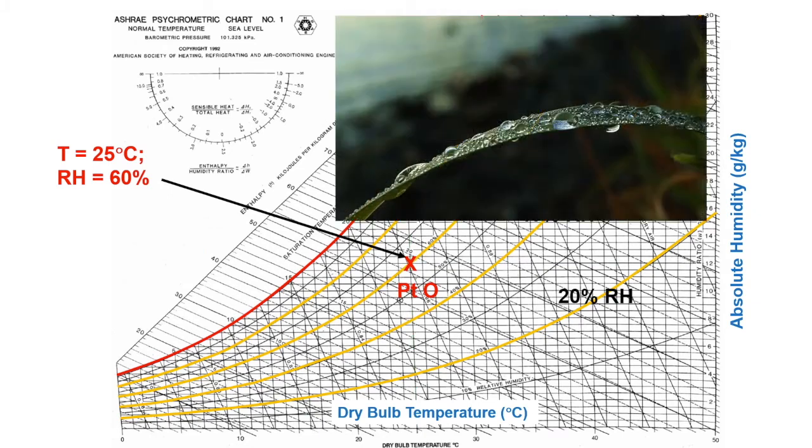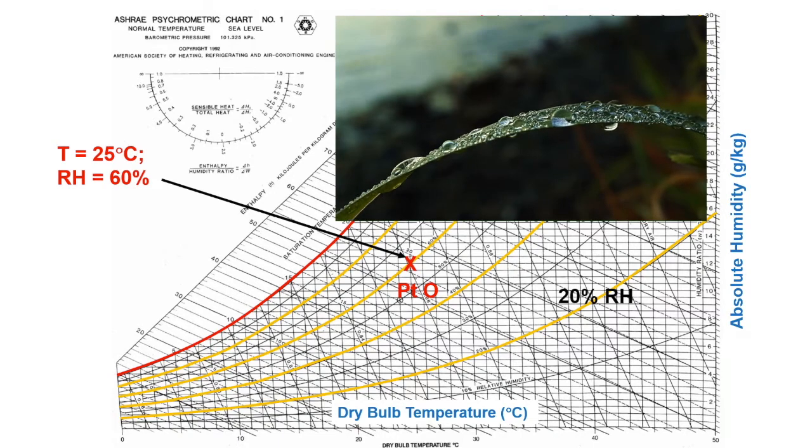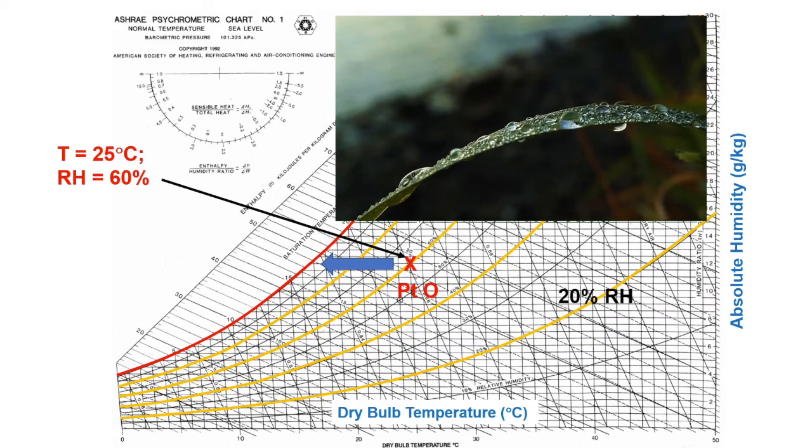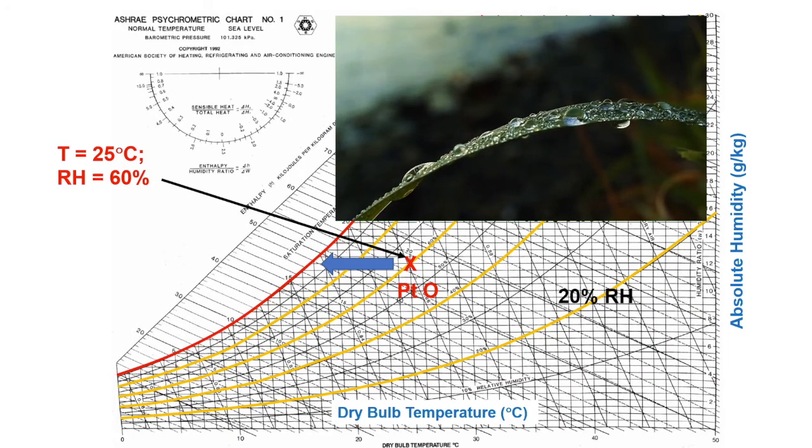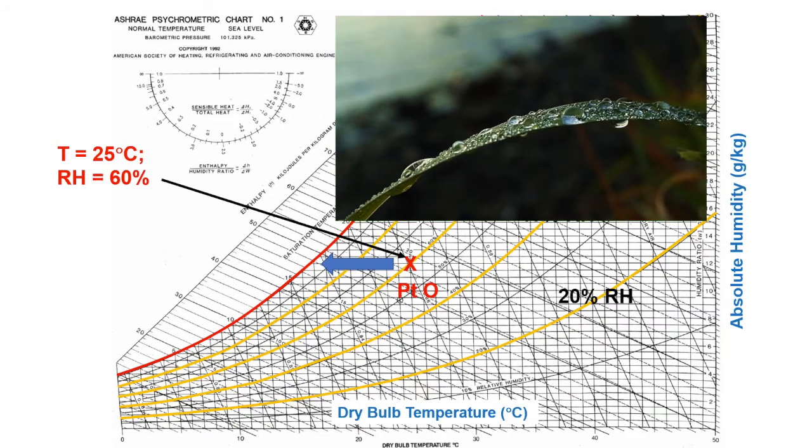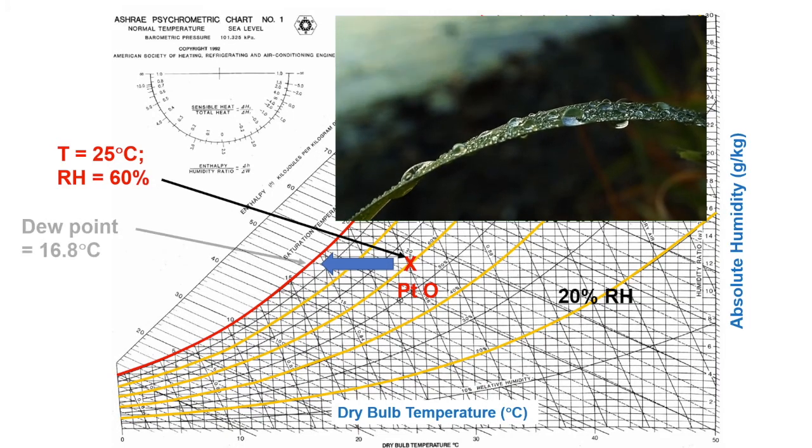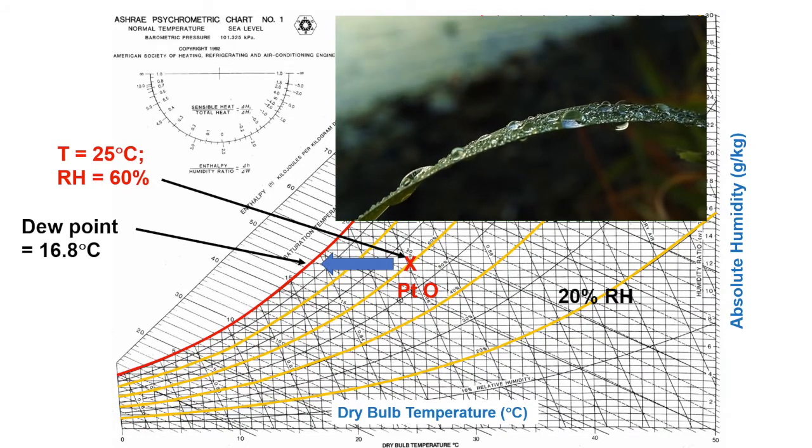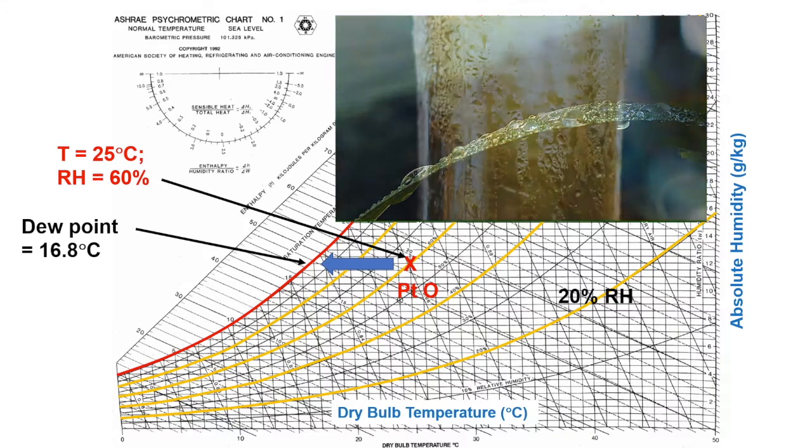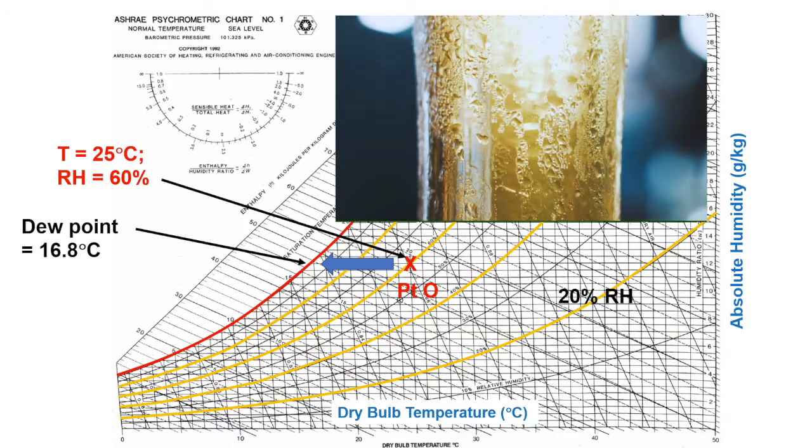Now we are ready to understand the condition when morning dew is formed. Say we start from point O again. If we decrease the temperature while keeping the same amount of moisture in air, relative humidity increases as colder air cannot hold as much water. If the temperature drops too low below the saturation line, water will condense out. This temperature is called the dew point, and this is exactly how morning dew is formed, as the air temperature at night dropped below the dew point of the air. This is also why night's cold beer usually has water condensation around it.